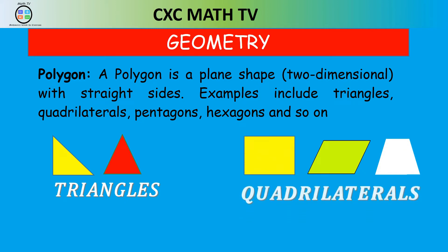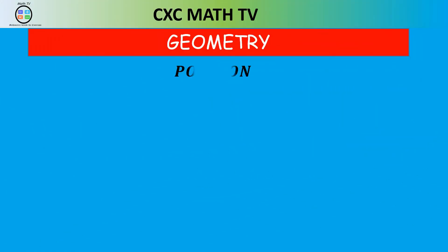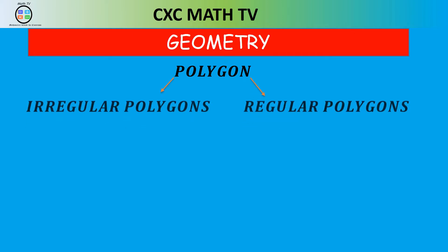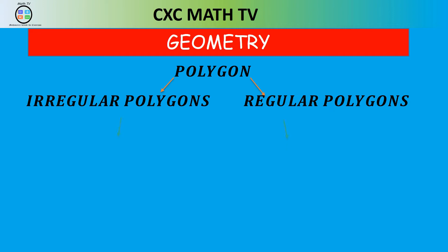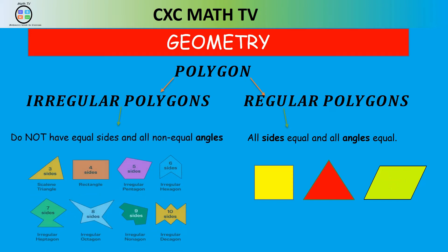We need to know the different types of polygons: irregular polygons and regular polygons. Regular polygons are where all the sides and all the angles are equal, like a square and triangle where all the sides are equal. Irregular polygons are just the opposite — they do not have equal sides and have non-equal angles. Here are some images of objects with different numbers of sides where the sides are not equal in length.